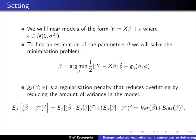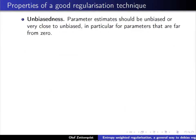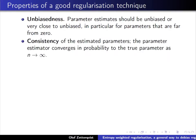Some desirable properties of a good regularization technique: first, we would like it to be unbiased or have very small bias, in particular for parameters far from zero, as these are easier to debias. Second, we would like it to be consistent—if the number of data points n goes to infinity, the estimated parameters should converge to the true parameters.